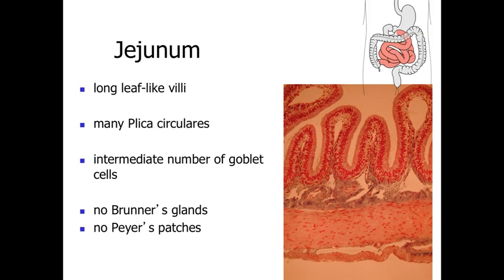Moving down to the jejunum — the majority of the small intestine — we see long leaf-like villi and many plicae circularis, providing lots and lots of surface area. This is important because the jejunum is where most absorption occurs. There is an intermediate number of goblet cells, with many absorptive cells present in the epithelial lining. In general, there are no submucosal mucous-secreting glands such as Brunner's glands, and no Peyer's patches within the wall, making it a relatively simple structure.